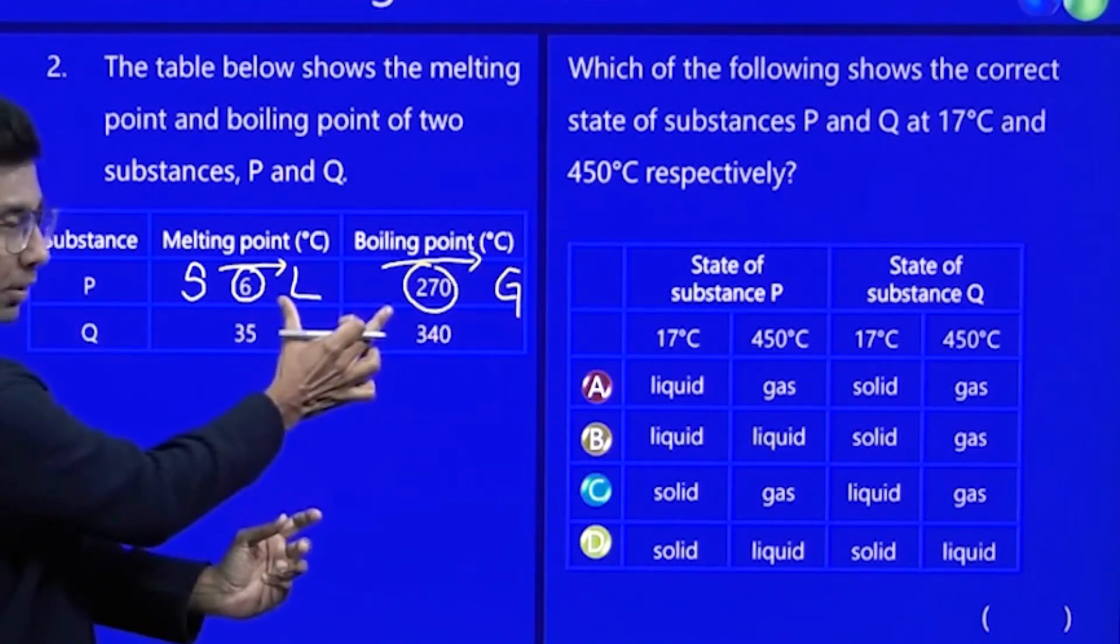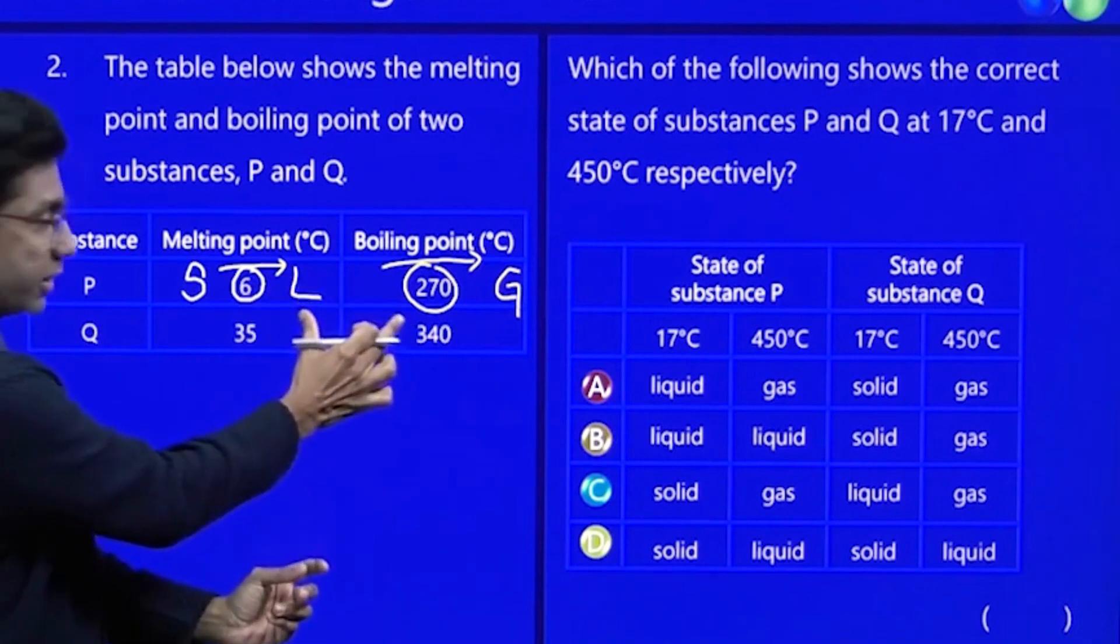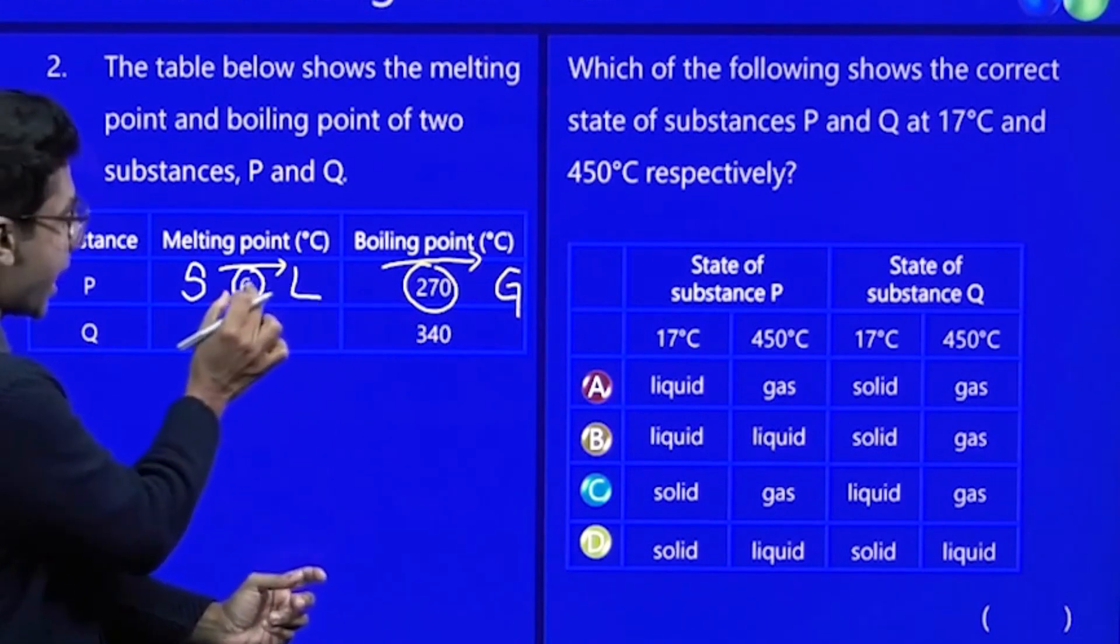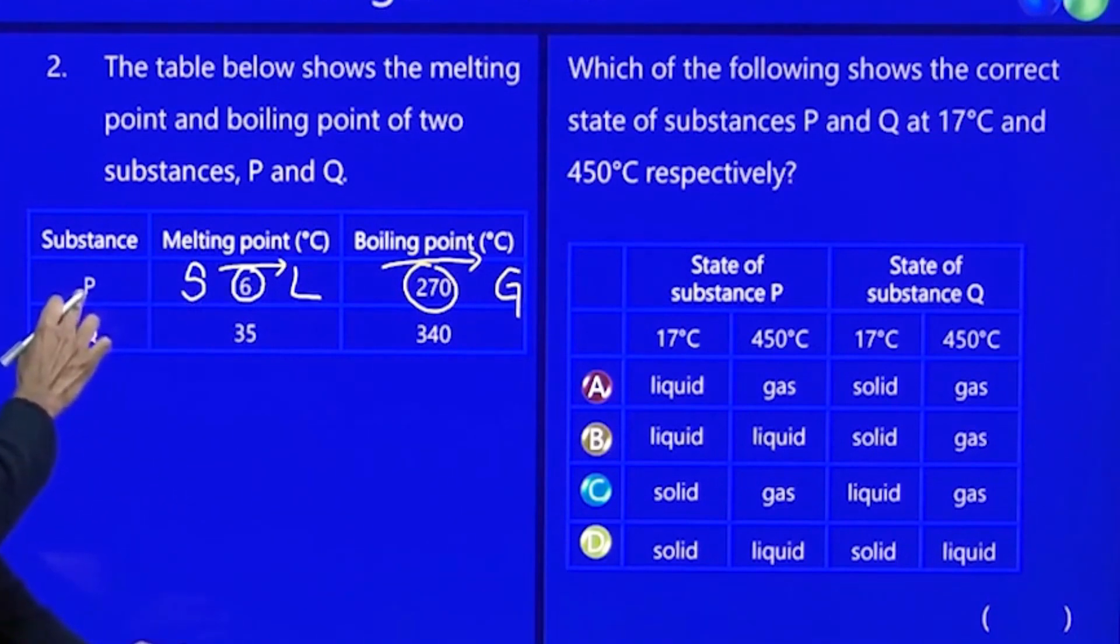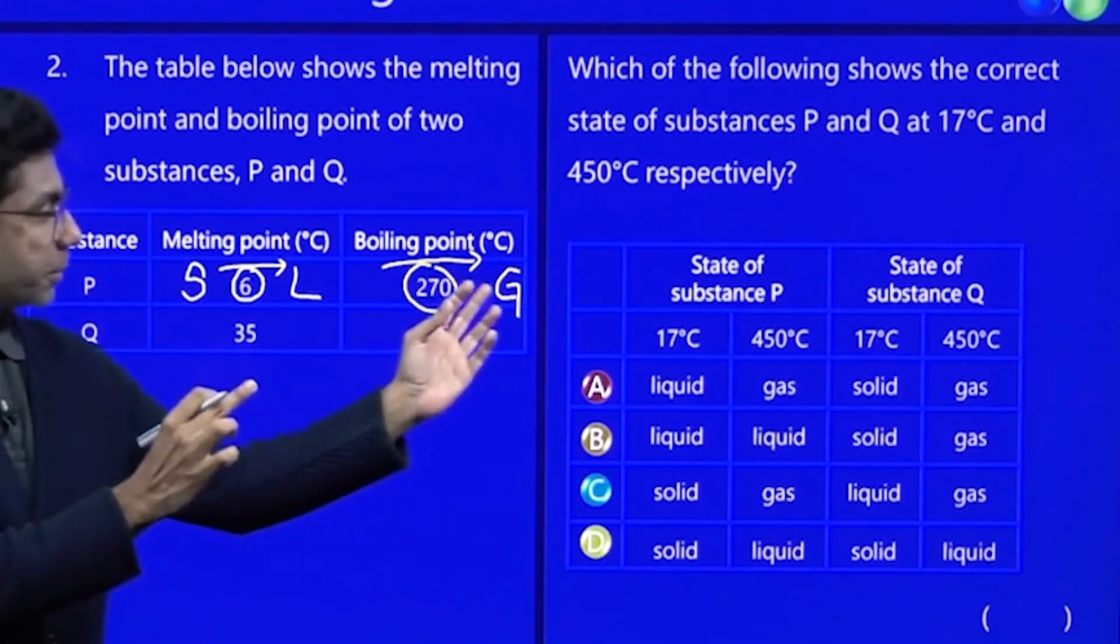So anything in between this number, 6 to 270, it will be a liquid. Anything below 6, meaning 5, 4, 3, 2, it will be a solid, this guy P. Anything above, it will be a gas.